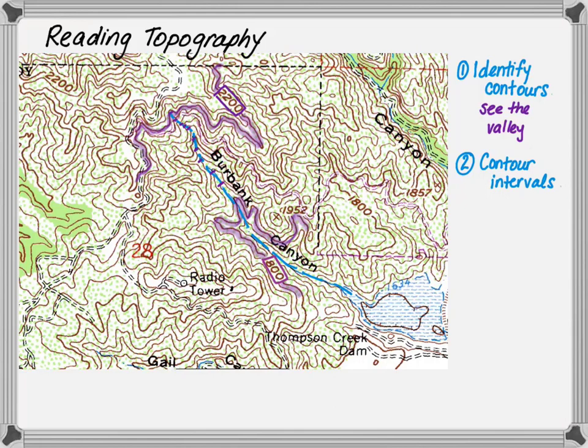So what you notice is there are 10 contours. Pause the video and confirm it for yourself. If you take 2,200, subtract 1,800, and divide by 10, you'll determine that each contour interval is 40 feet.